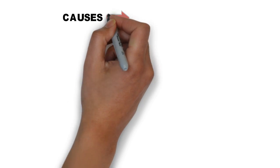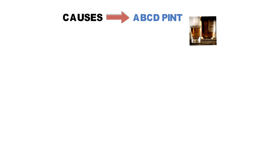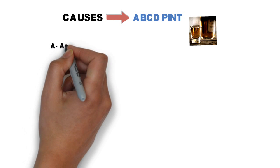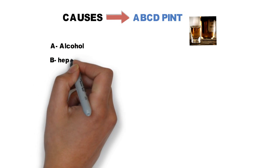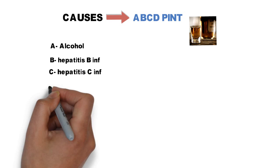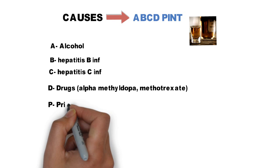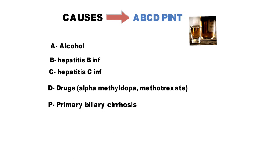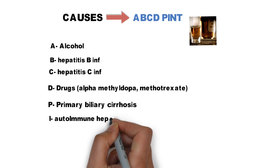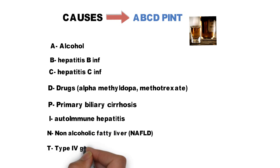Now the causes of cirrhosis can be remembered by a mnemonic: ABCD pint. Remember it as if a drunk person can't even say ABCD. A for alcohol, B for hepatitis B infection, C for hepatitis C infection, D for drugs which can be alpha-methyldopa or methotrexate, P for primary biliary cirrhosis, I for autoimmune hepatitis, N for non-alcoholic fatty liver disease, and T for type 4 glycogen storage diseases.